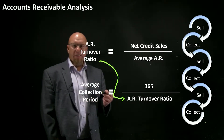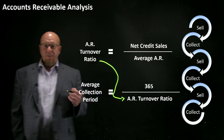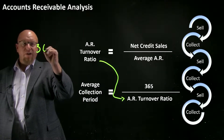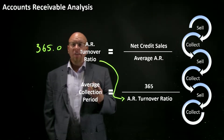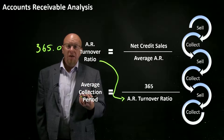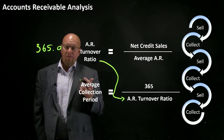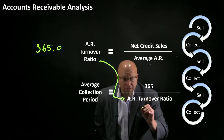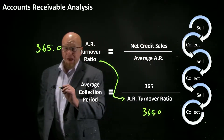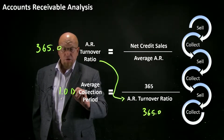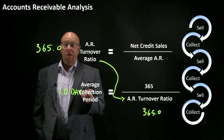Let's think about a couple of extreme examples. Consider an accounts receivable turnover ratio of 365.0. That means 365 times during the year we make a sale and collect it. If that were the case, look at what would happen to your average collection period: 365 is the turnover ratio, which means on average you're only waiting one day to collect your receivables — which is pretty good.